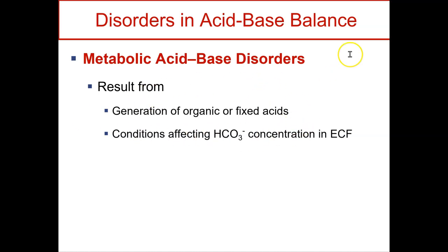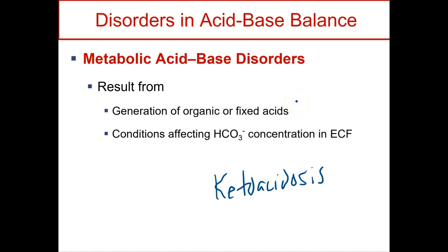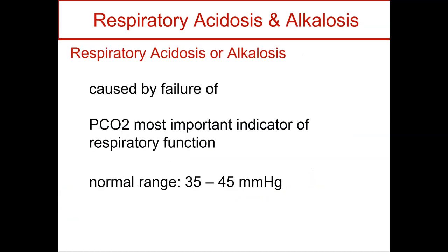We make acids every single day. Metabolic acidosis could be something like ketoacidosis if we're making too many ketones, or if we have a problem with our bicarb. Remember, we want to maintain that 20 to 1 ratio of base bicarb to carbonic acid — maybe there's a problem and we don't have enough base, or there's a problem in the kidneys. For respiratory, we're looking at failure of the lungs, and we look at the CO2.